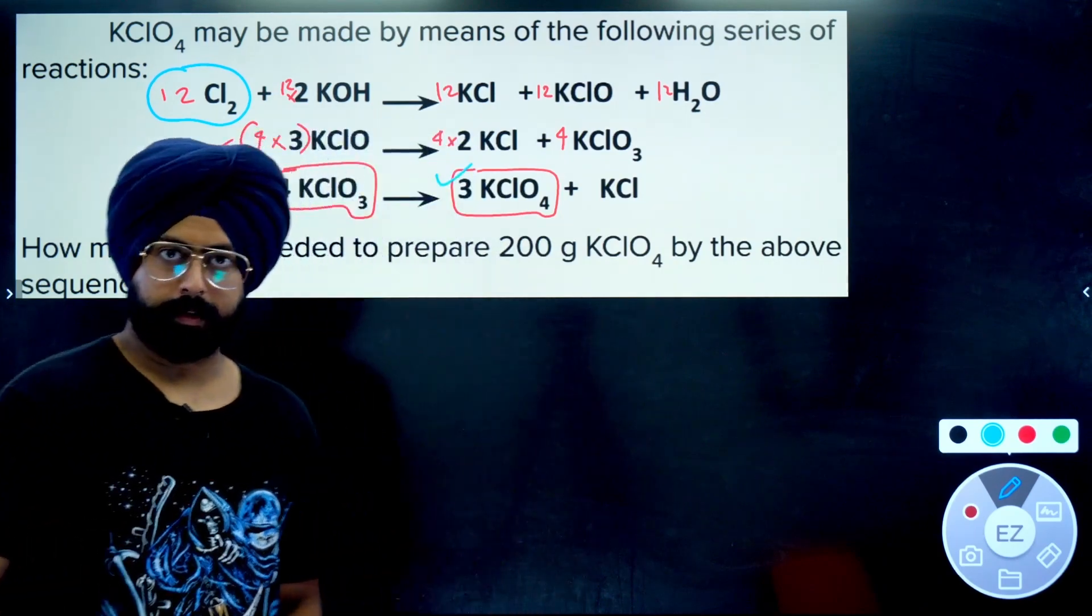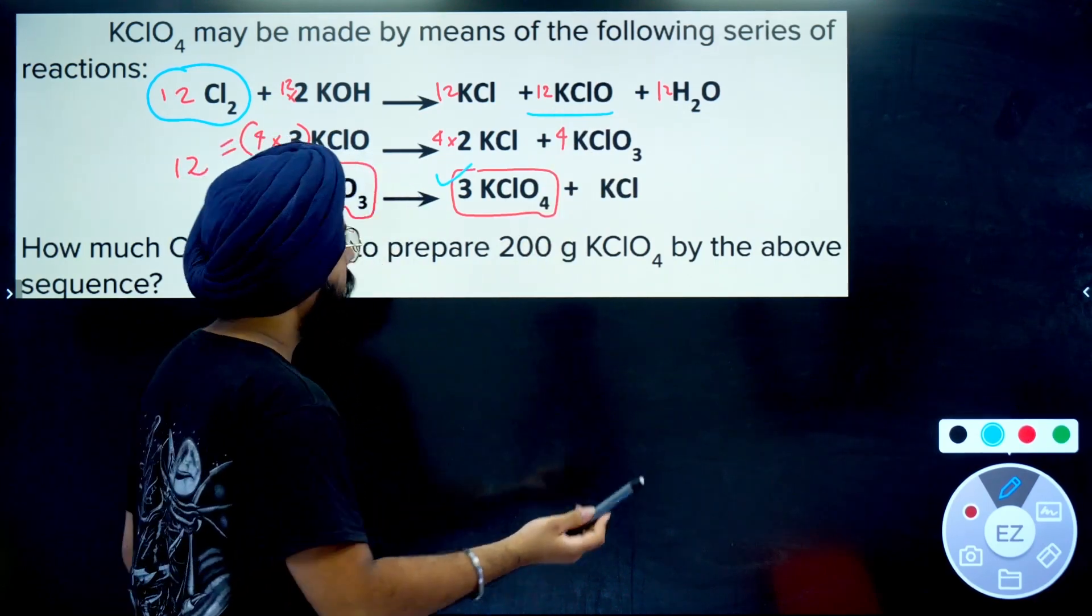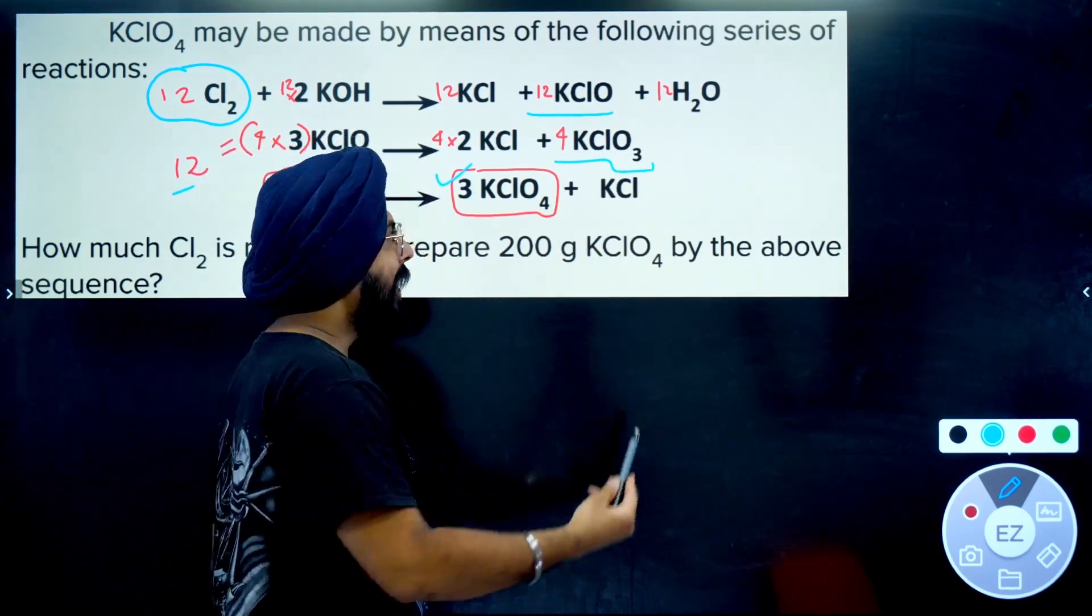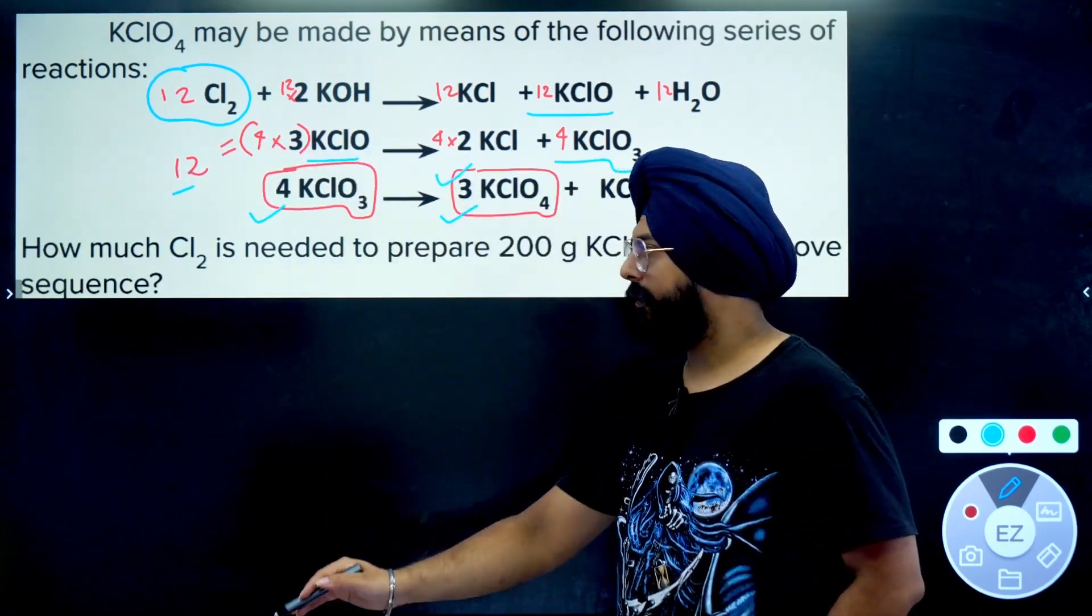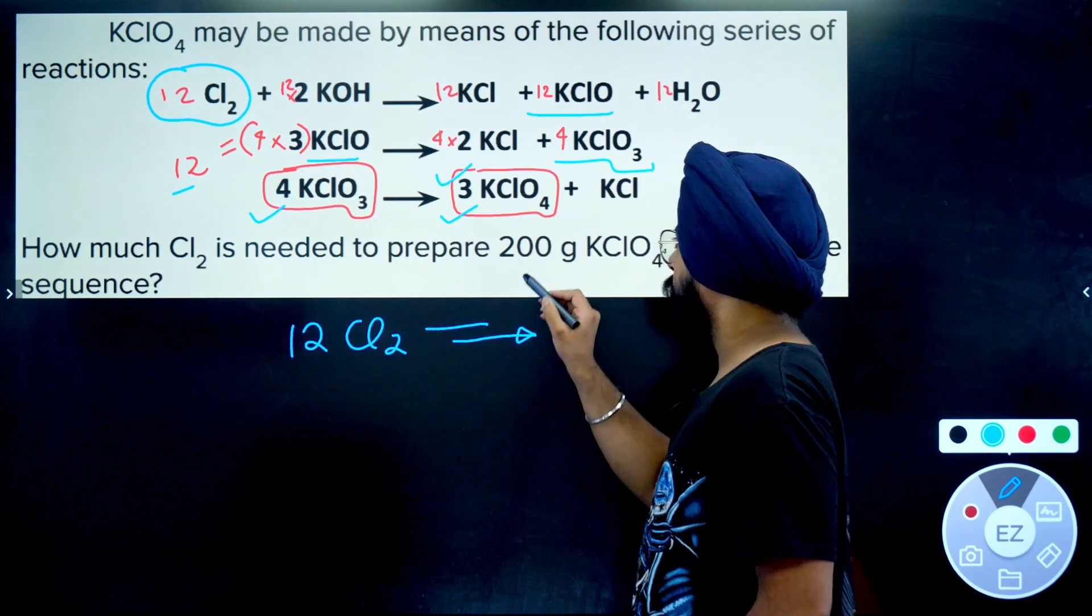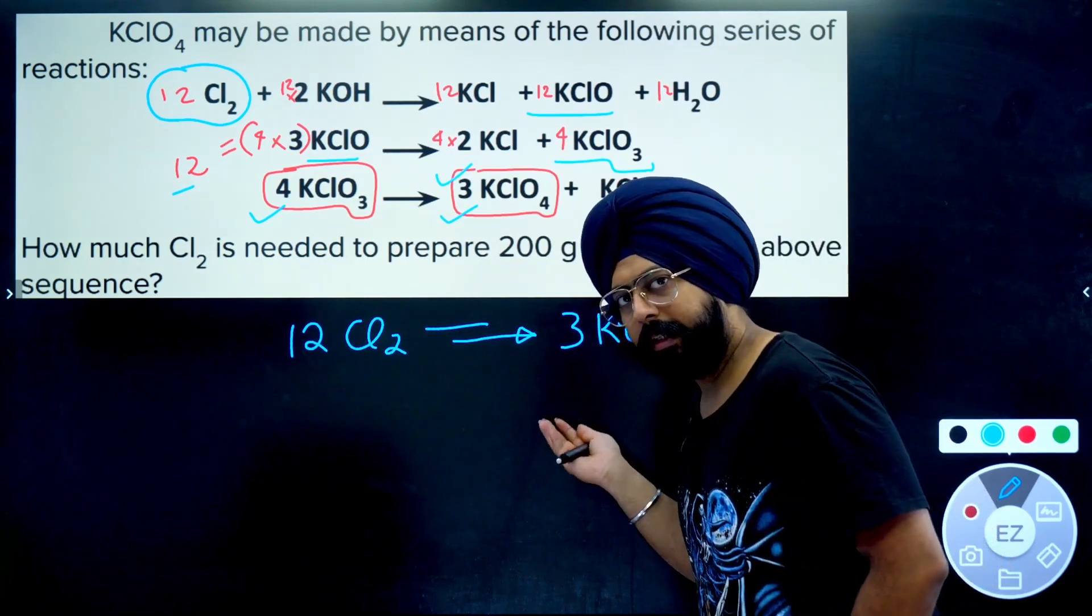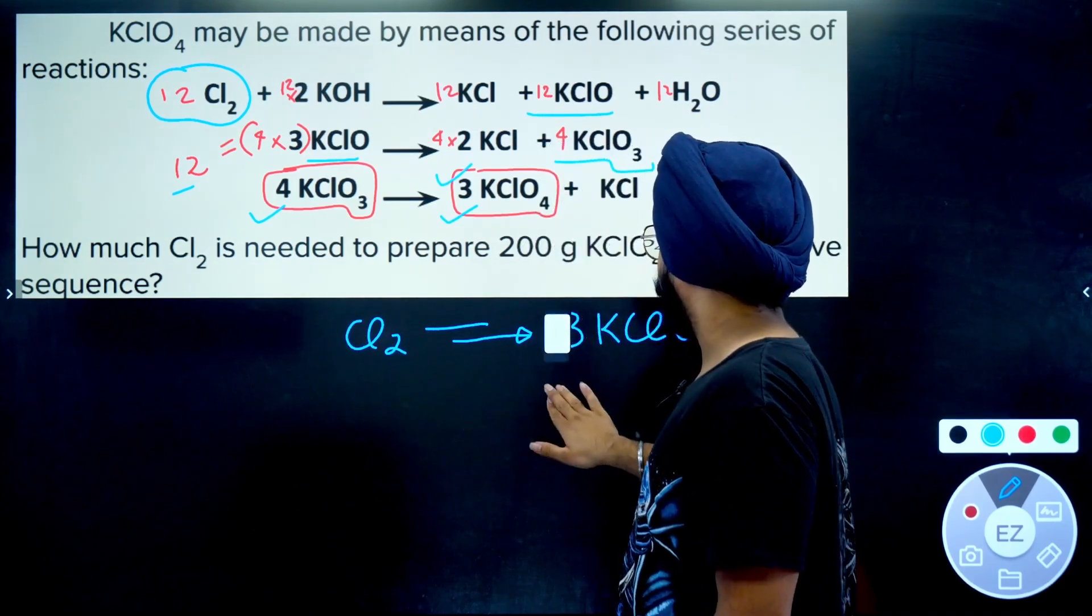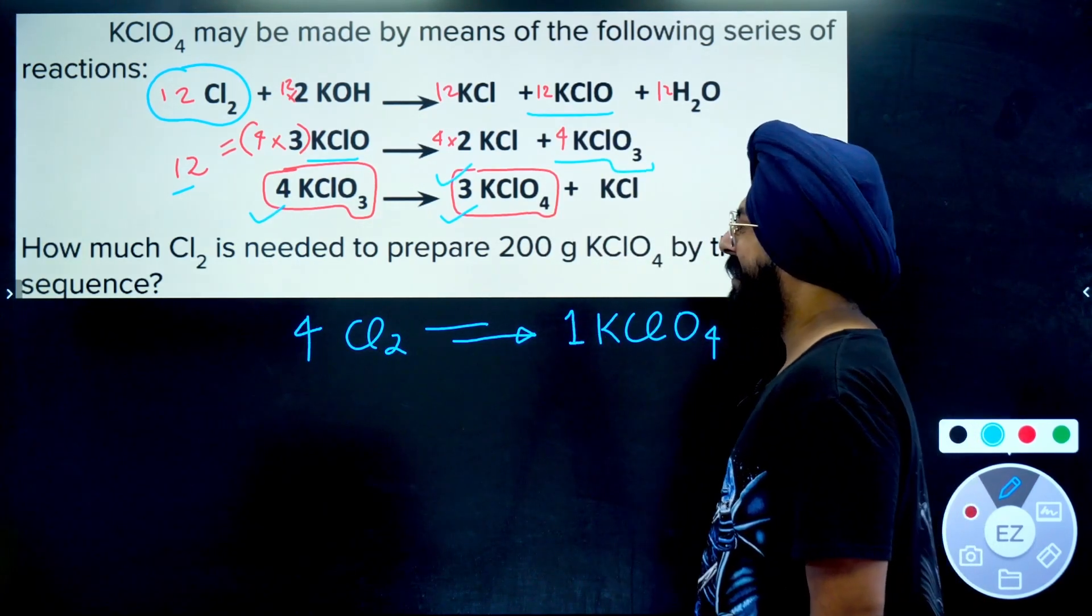Now the point over here is that if I start with 12 moles of Cl₂, I end up at 3 moles of KClO₄. The story now sounds like this: If I start at 12 moles of Cl₂, I would end up with 12 moles of KClO. Then if I take the same 12 moles of KClO, I would end up with 4 moles of KClO₃, and this 4 moles of KClO₃ would eventually end up giving me 3 moles of KClO₄. So ultimately the result is that 12 moles of Cl₂ would eventually give rise to 3 moles of KClO₄. If I want to simplify this ratio, I will divide both sides with the number 3, and the ratio gets simplified to 4 moles of Cl₂ will eventually give me 1 mole of KClO₄.